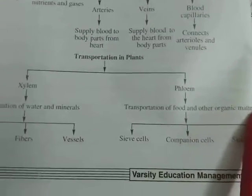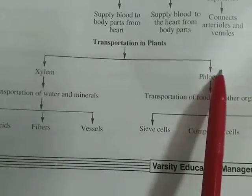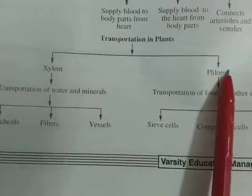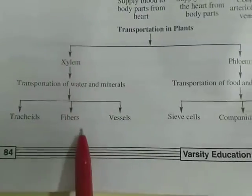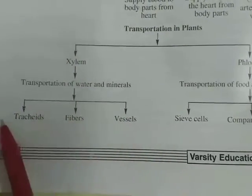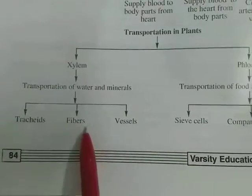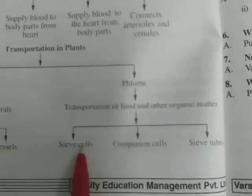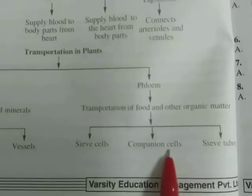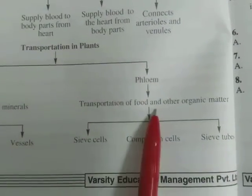If you observe xylem, it contains tracheids, fibers, and vessels. With the help of these tracheids, fibers, and vessels, xylem can transport water and minerals. With the help of sieve cells, companion cells, and sieve tubes, phloem can transport food materials and other organic matter from one place to another in a plant body.